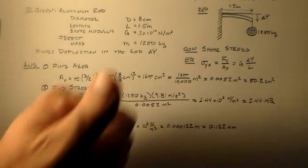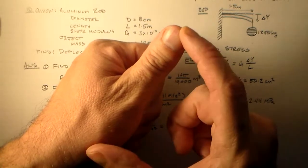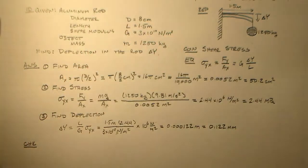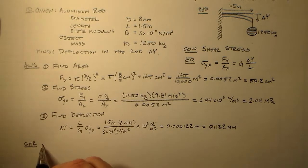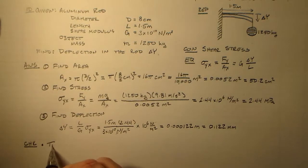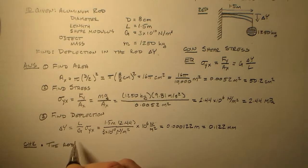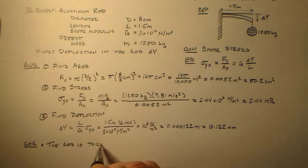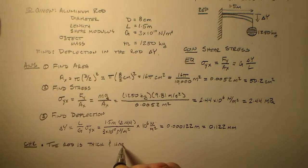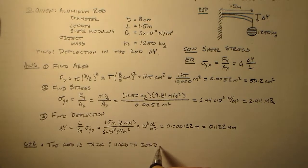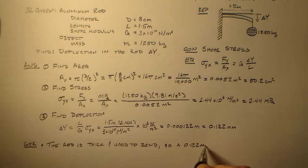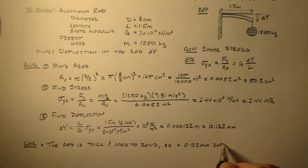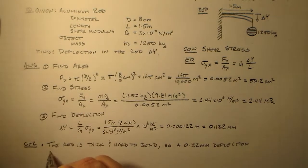And I sort of told you before that I didn't think this would be a very big deflection. Again, because we've got a metal rod about that thick. It might be aluminum, but it's still a metal rod about that thick. Which is not easy to bend. So that's a good check. I said, you know, the rod is thick and hard to bend.